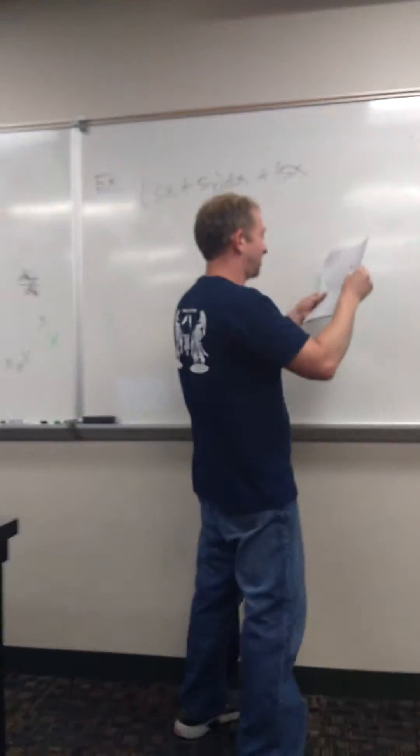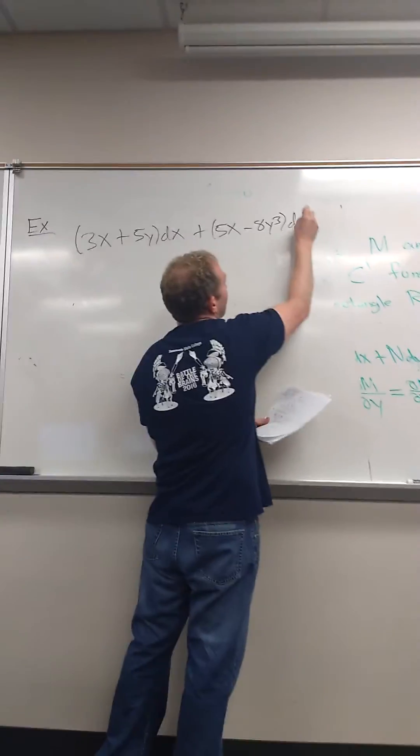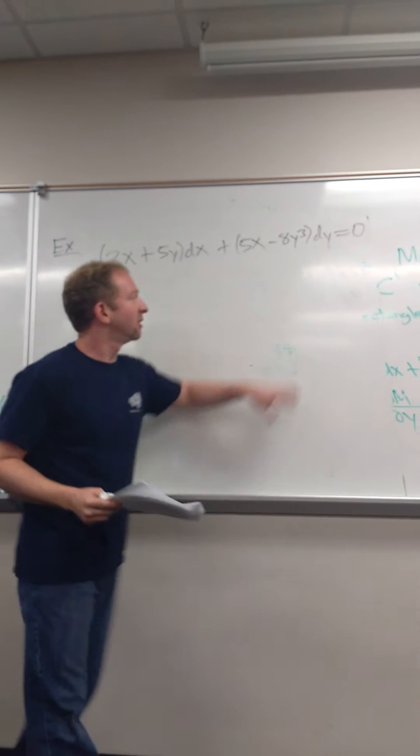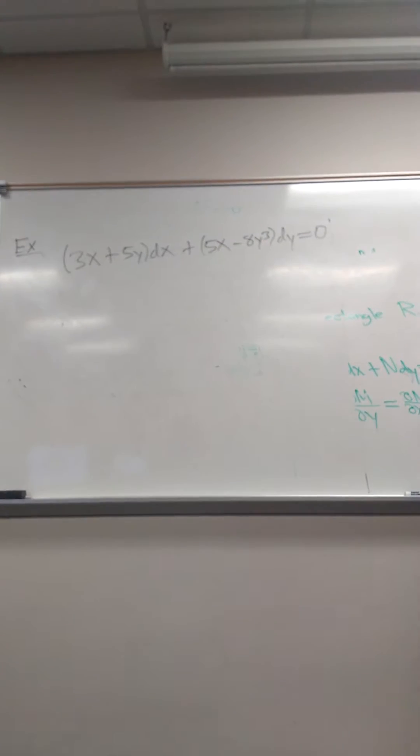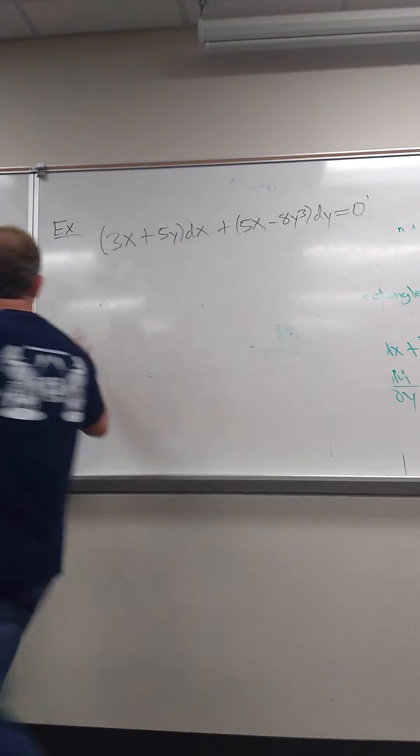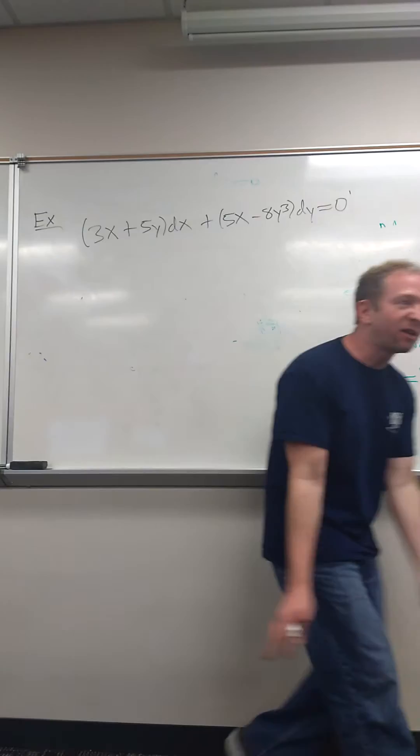5x minus 8y cubed dy equals 0. So it looks like this. And the question is obviously to solve the differential equation. So whenever it's written like this, you have some stuff dx, some stuff dy, it's probably going to be exact.